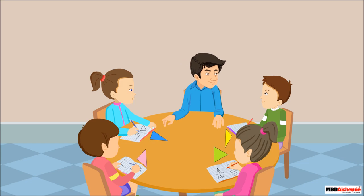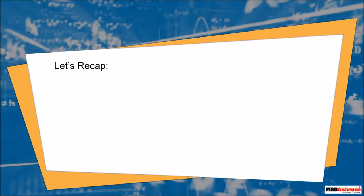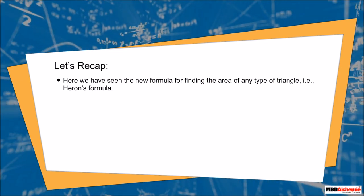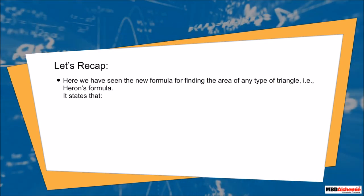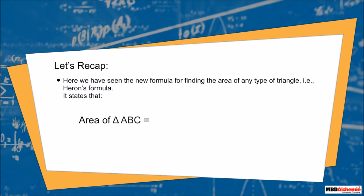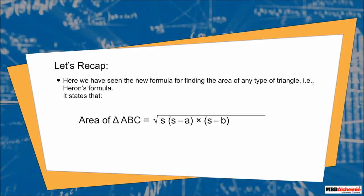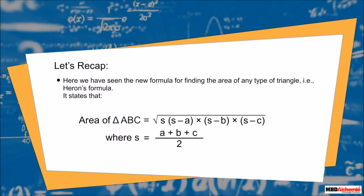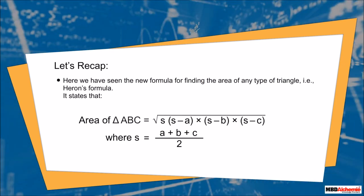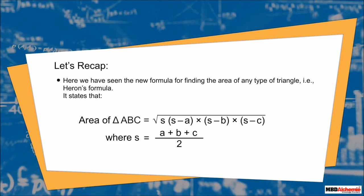Sid, Rhea, and Sophie thank Neil's father for sharing Heron's formula. To recap: Heron's formula states that the area of a triangle equals the square root of s × (s − a) × (s − b) × (s − c), where a, b, and c are the sides of the triangle and s is the semi-perimeter, that is, half of the perimeter of the triangle.